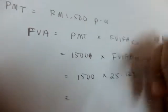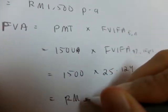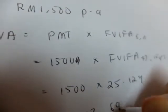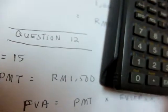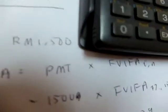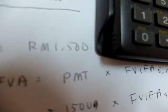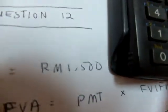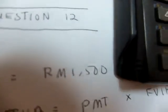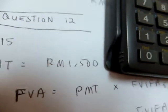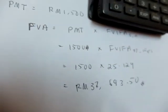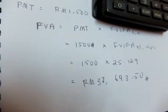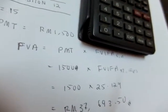You get 37,693.50. So that is the ordinary annuity.